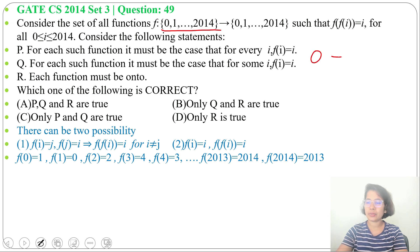So here, each set contains 0, 1, 2, ..., means set cardinality is 2015. If we will do cross like f(i) = j, f(j) = i, at least there will be one number for which f(i) will be i. Now check the statements.